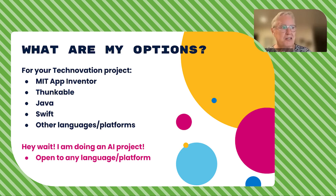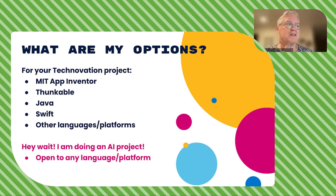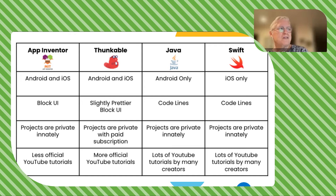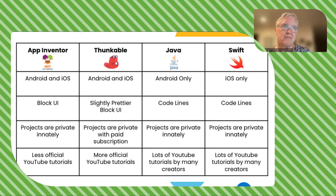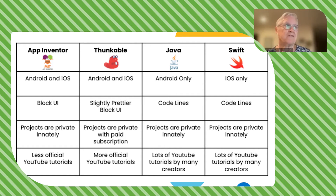Also, as I mentioned, if you're not creating an app but you want to create an AI project, you can do that as well. So these are the options talked about in the Technovation curriculum: App Inventor, Funkable, Java, and Swift.